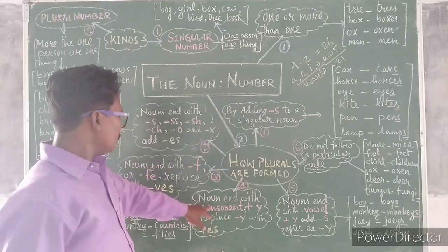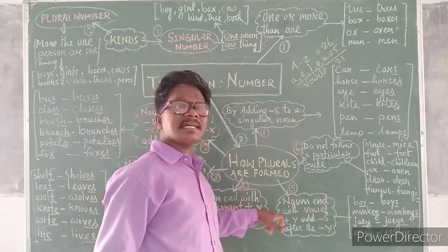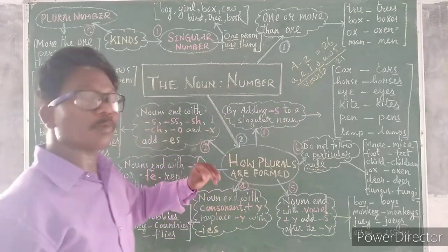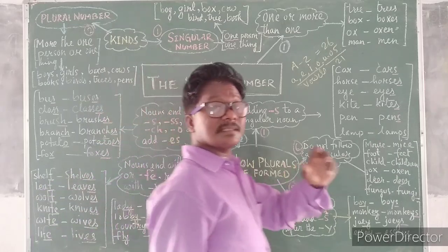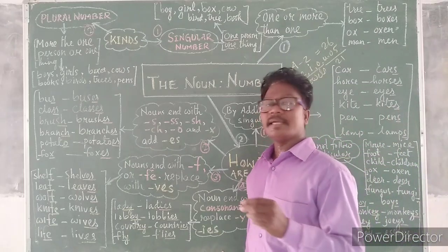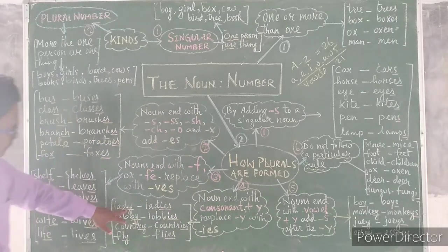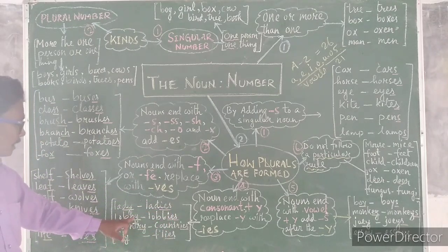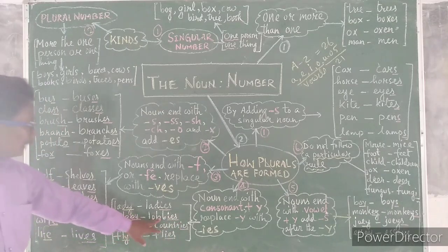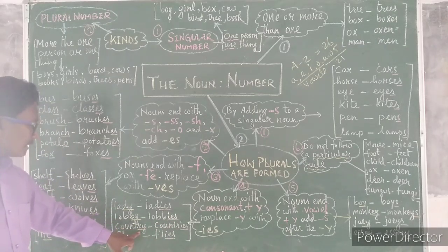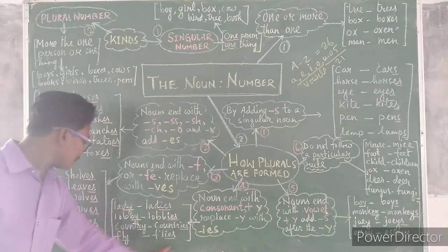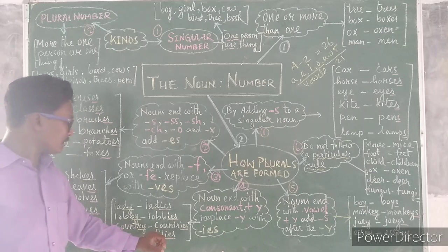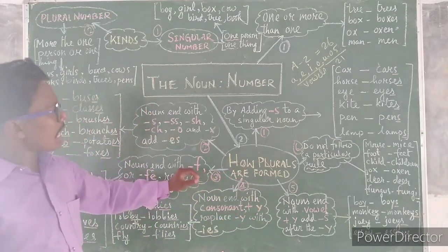So in the fourth rule, a noun ends with a consonant and Y — we replace Y with IES. Examples: lady — D and Y are both consonants, so we replace Y with IES, giving ladies. Lobby — consonant B and Y, giving lobbies. Country — R and Y consonants, giving countries. Fly — L and Y consonants, giving flies. This is the fourth way of forming a plural number.